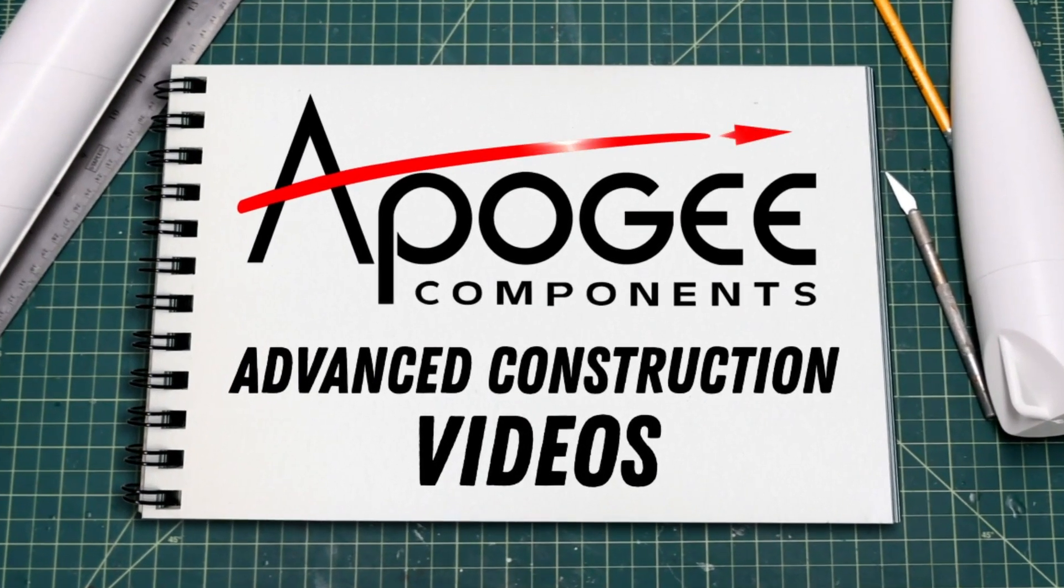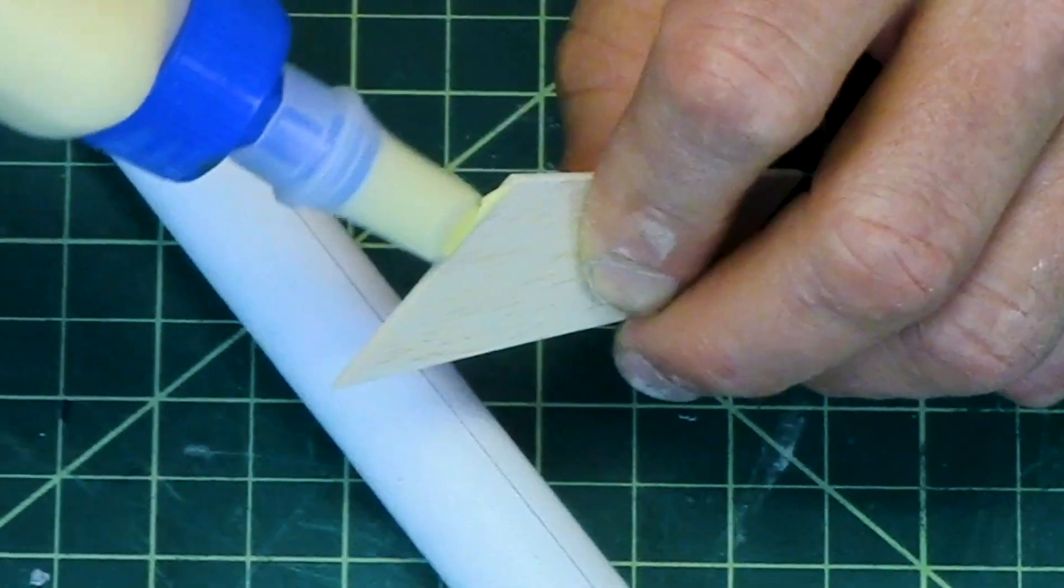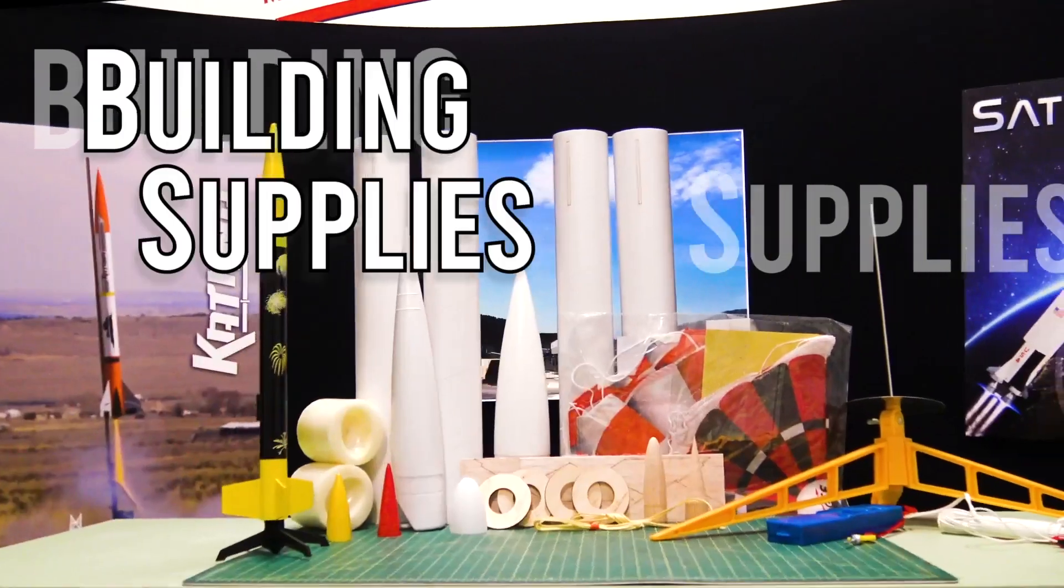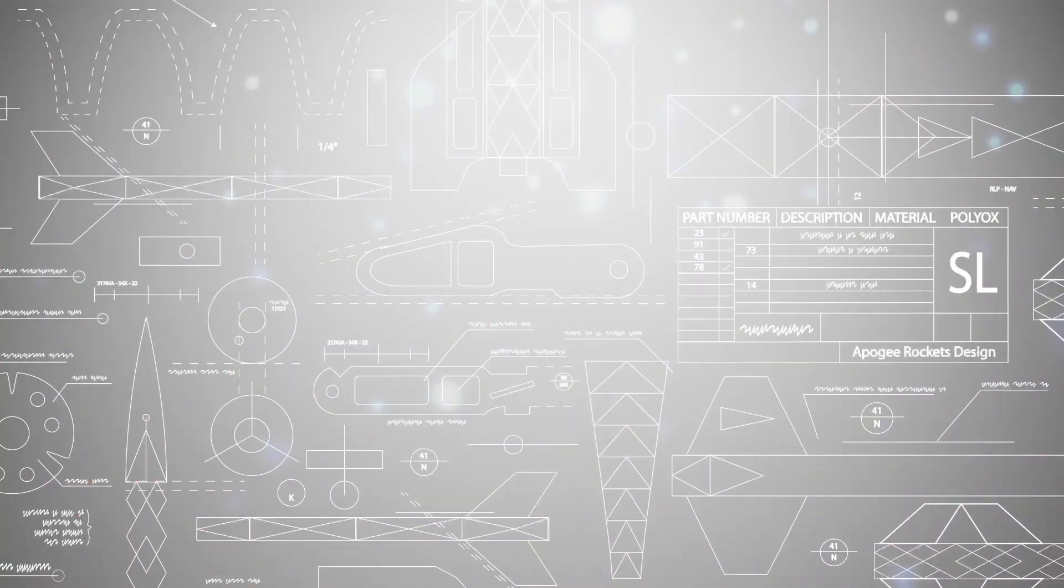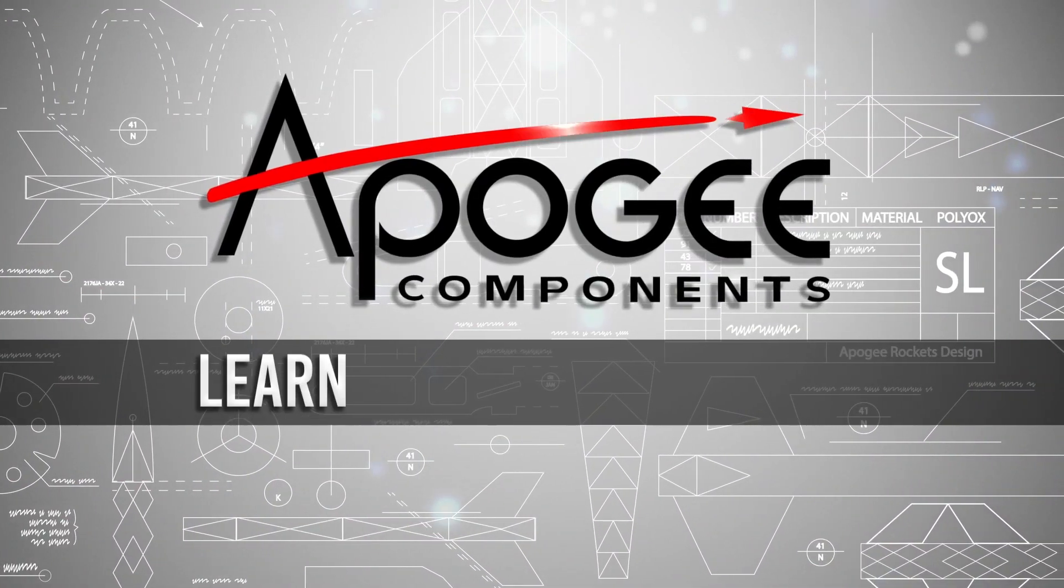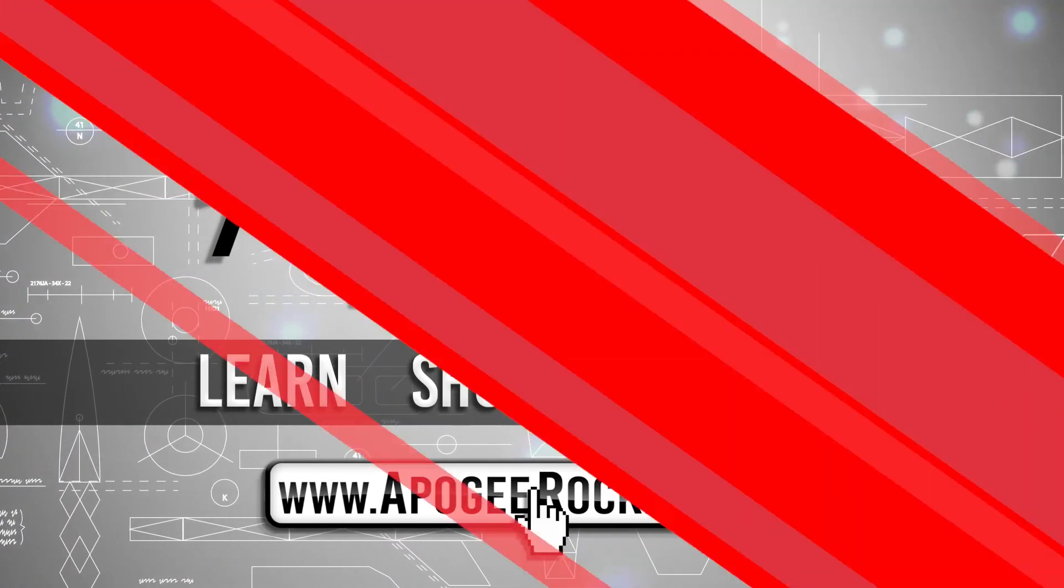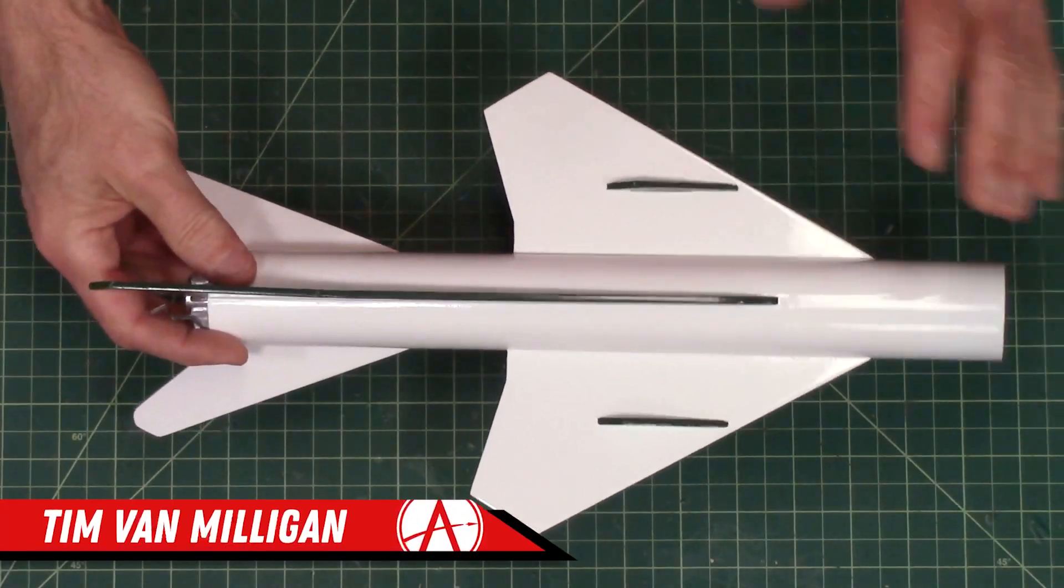On our website we sell kits, motors, building supplies and electronics. So come and learn, shop, build and fly when you visit us at Apogee Rockets.com.